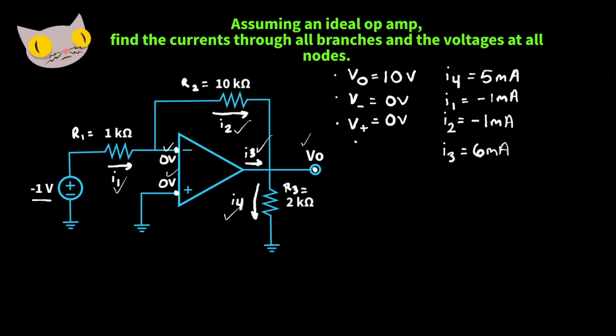So here we found all the node voltages and all the branch currents of this ideal inverting op amp. I hope this helped you out, and thanks for watching.